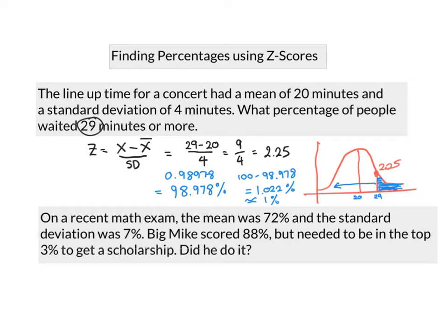On a recent math exam, the mean was 72% and the standard deviation was 7%. Big Mike scored 88%, but needed to be in the top 3% to get a scholarship. So we're going to do the same formula. Z equals the data point minus the mean divided by the standard deviation. So his data point was 88, the mean was 72, and the standard deviation was 7. So that's 16 divided by 7, which is 2.285. So 2.29, we'll call it.